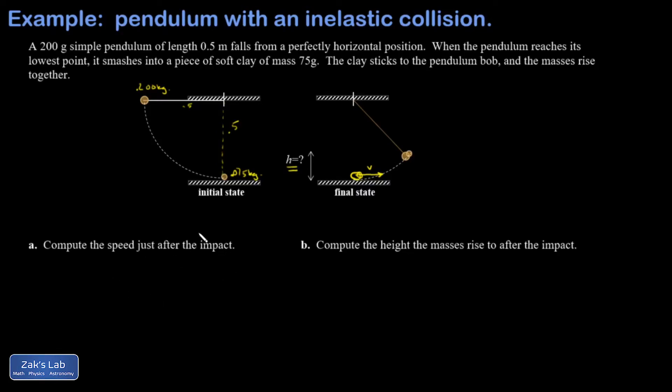So let's get the speed just after the impact. Well, I need the speed before the impact if I'm going to do that. So I use conservation of energy for that. And that's just the pendulum bob falling down to the lowest position just before the impact happens.